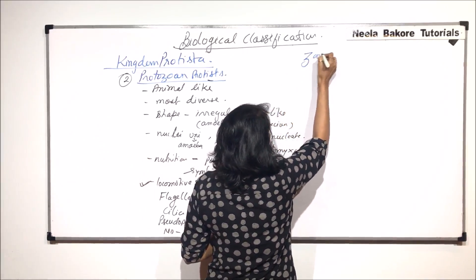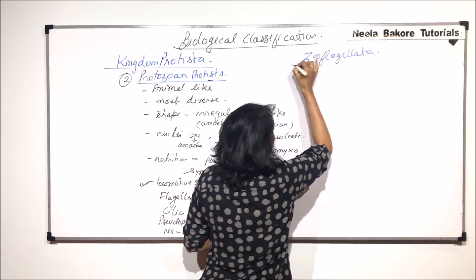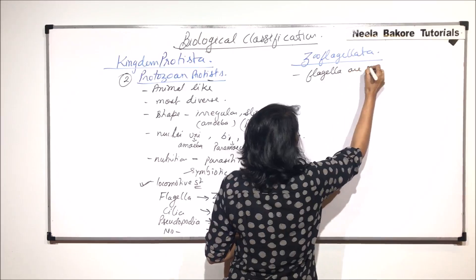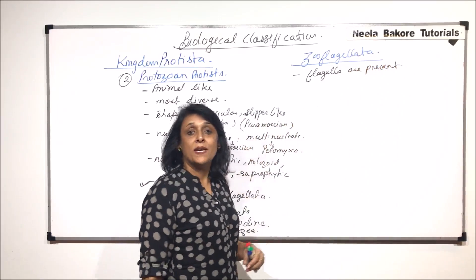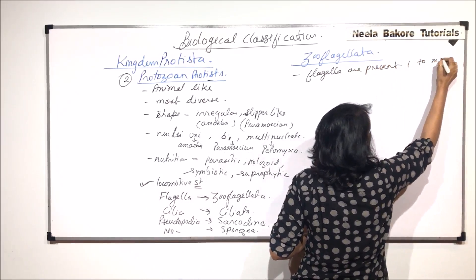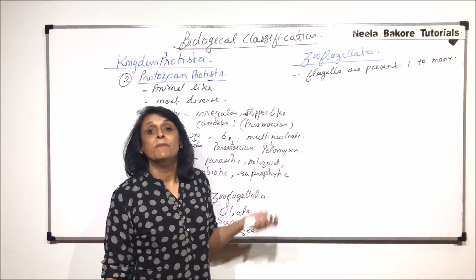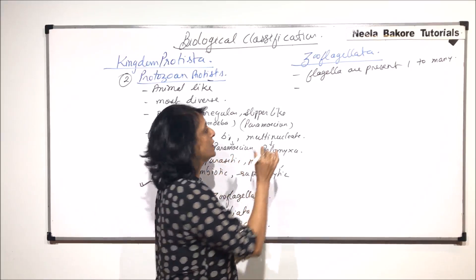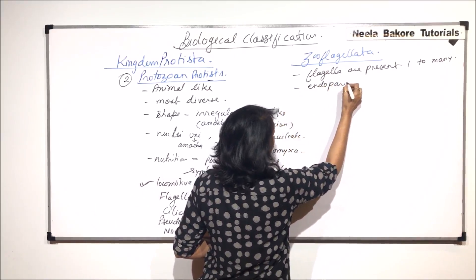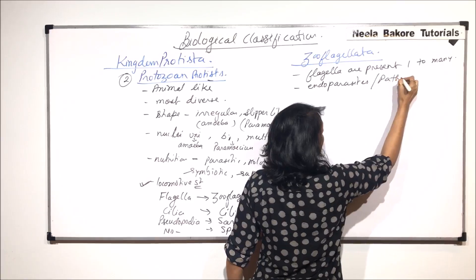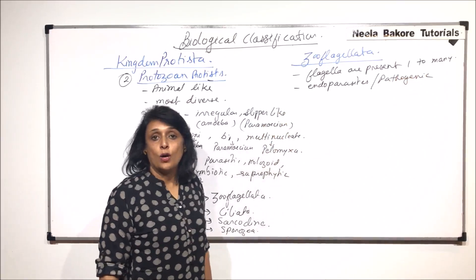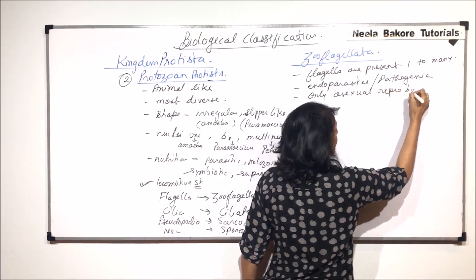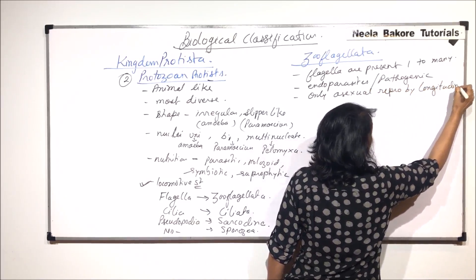We will start with Zooflagellata. As the name tells us, the locomotive structure is flagella. The number of flagella can be one, two, or many — we will understand the variation when we take examples. Most of the zooflagellates are endoparasites and pathogenic, meaning they are disease-causing. They show only asexual reproduction, and that is by longitudinal binary fission.